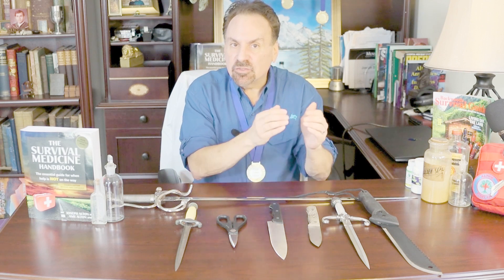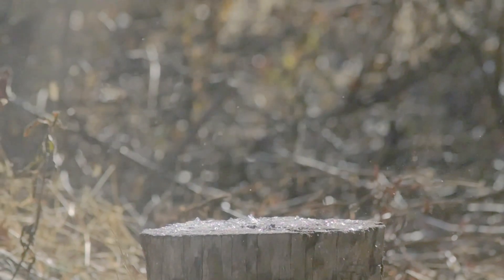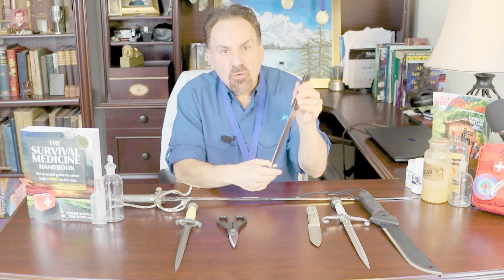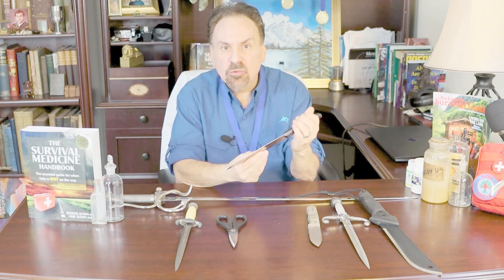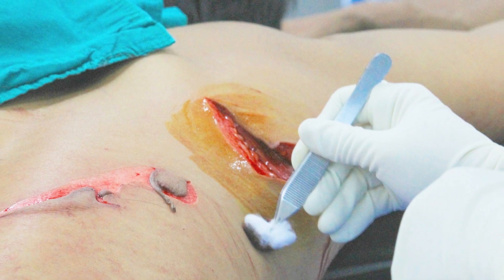Stab wounds are a type of penetrating trauma, which is further divided into perforating and non-perforating injuries. A perforating wound is one in which the object causing the damage goes in one side of the body and then exits out the other side — a round from a .223 or 5.56 would be a good example. Bullets and other high-speed projectiles cause damage not only from active penetration but also from the shockwave produced as the bullet passes through the body. Low-speed projectiles, such as knives, don't produce much of a shockwave, so your concerns are mostly related to the area of entry and the structures located directly in the path of the offending instrument.